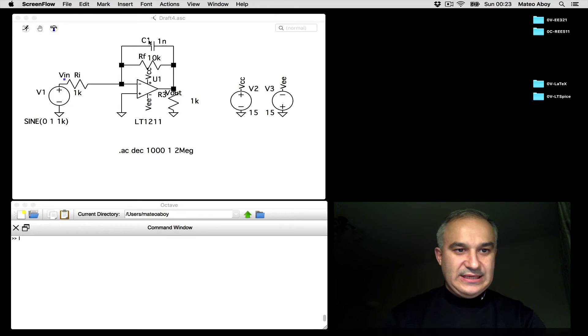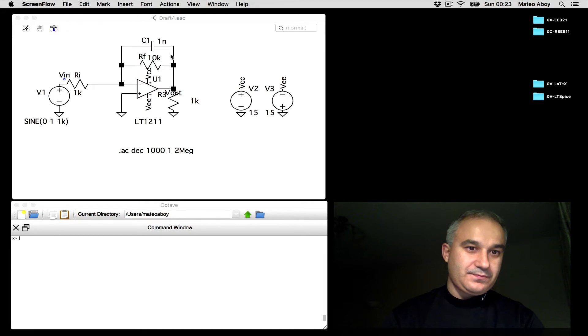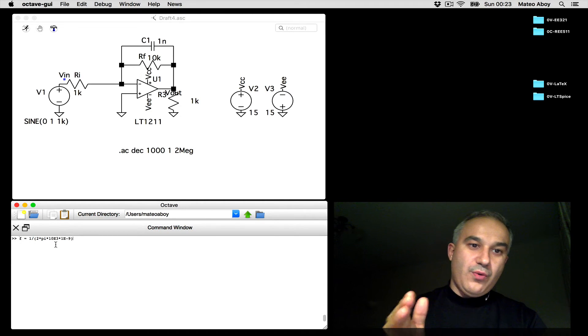We can see that we have a capacitor in the feedback and so at high frequencies the capacitor is going to become a short and what we see is that that's going to attenuate. The V-out is going to go to zero. Now, to calculate the corner frequency...